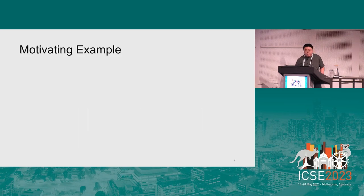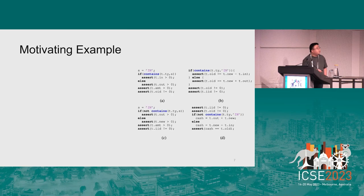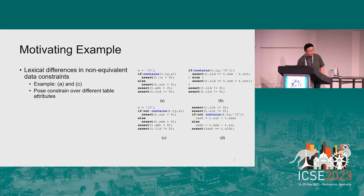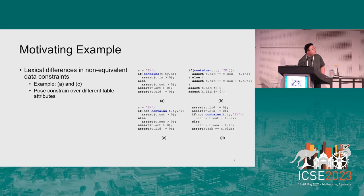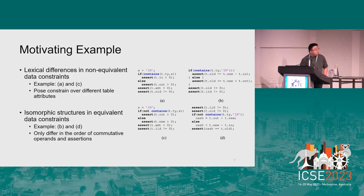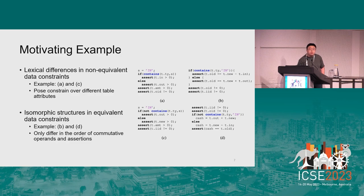To address these technical challenges, our key ideas come from two important observations on data constraints. First, data constraints A and C must not be equivalent because they examine different attributes in table t, showing different logical features. On the other hand, data constraints B and D are equivalent. After symbolically evaluating the values of the user-defined variable cache in constraint D, these two constraints are almost the same, despite differences in commutative operations and structures. Such isomorphic structures help us determine equivalence.